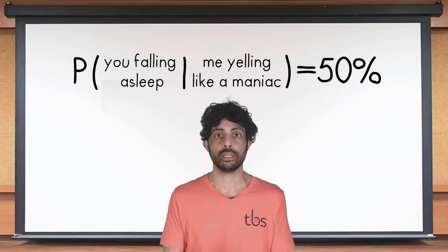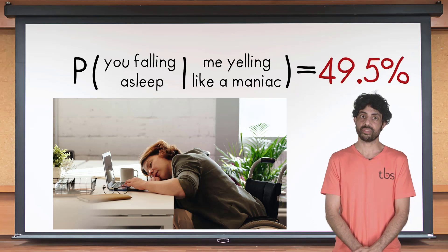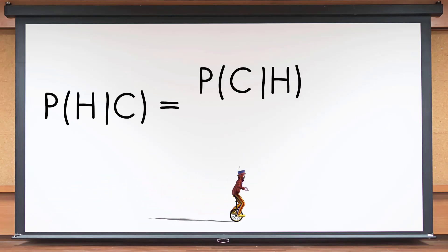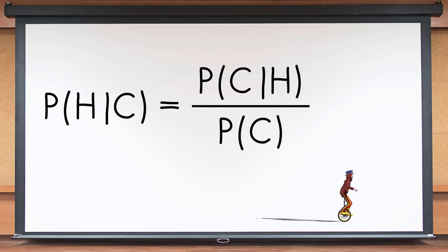The general formula given to us by Bayes is: the probability of a hypothesis H given some condition C is equal to the probability that the condition is true given that the hypothesis is true, divided by the probability the condition is true, times the probability the hypothesis is true. Got it? Good.